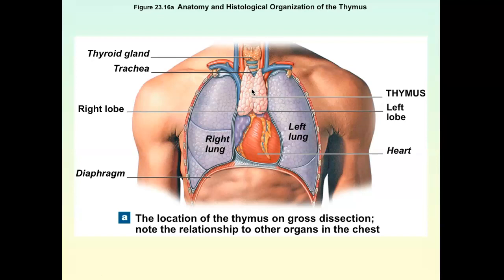One really interesting thing about the thymus is that it shrinks as you age. At age 20, you still have 80% of your functional tissue left. At 40, only 5% of that tissue is still functional — it really shrinks and degenerates as you age. In a gross anatomy lab at USC, a professor mentioned that in older cadavers, when they open them up, there's never a thymus — just a tiny little wad of connective tissue.